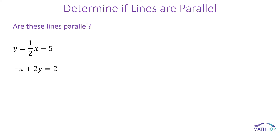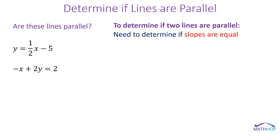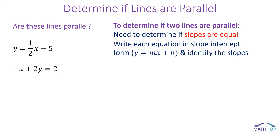Given these two lines, are they parallel? We want to find this out without graphing, by using the fact that parallel lines have equal slopes. So we need to determine if the slopes are equal, and to do that I want to use the easiest form for identifying slope — slope-intercept form, otherwise known as y equals mx plus b. I'm going to put both equations in slope-intercept form, identify the slopes, and if they're equal, the lines are parallel.